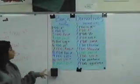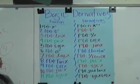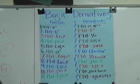So the first function is f(x) equals x to the n. The derivative of it is f'(x) equals n times x to the n minus 1 power.